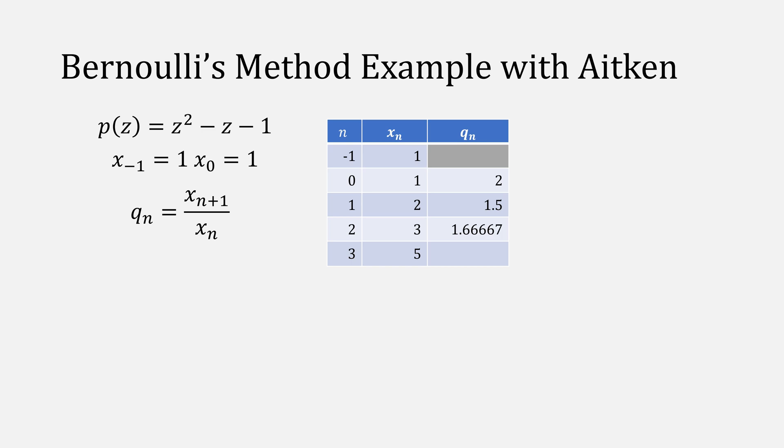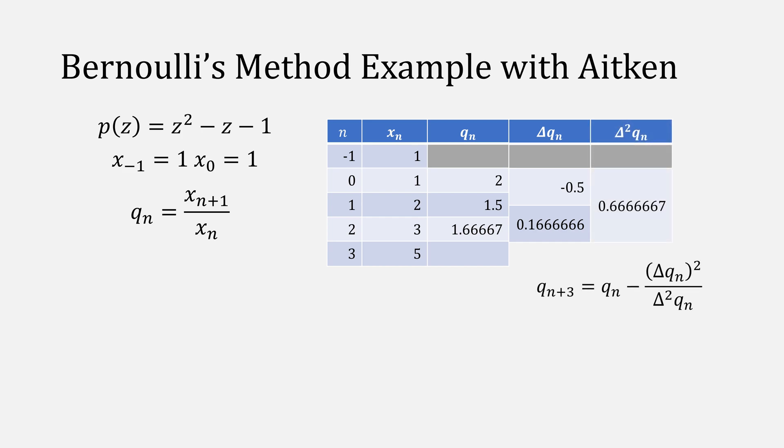Compute our differences and our second order differences and plug them into Aitken's delta squared method to compute q sub 3. This gives us the value of 1.625.